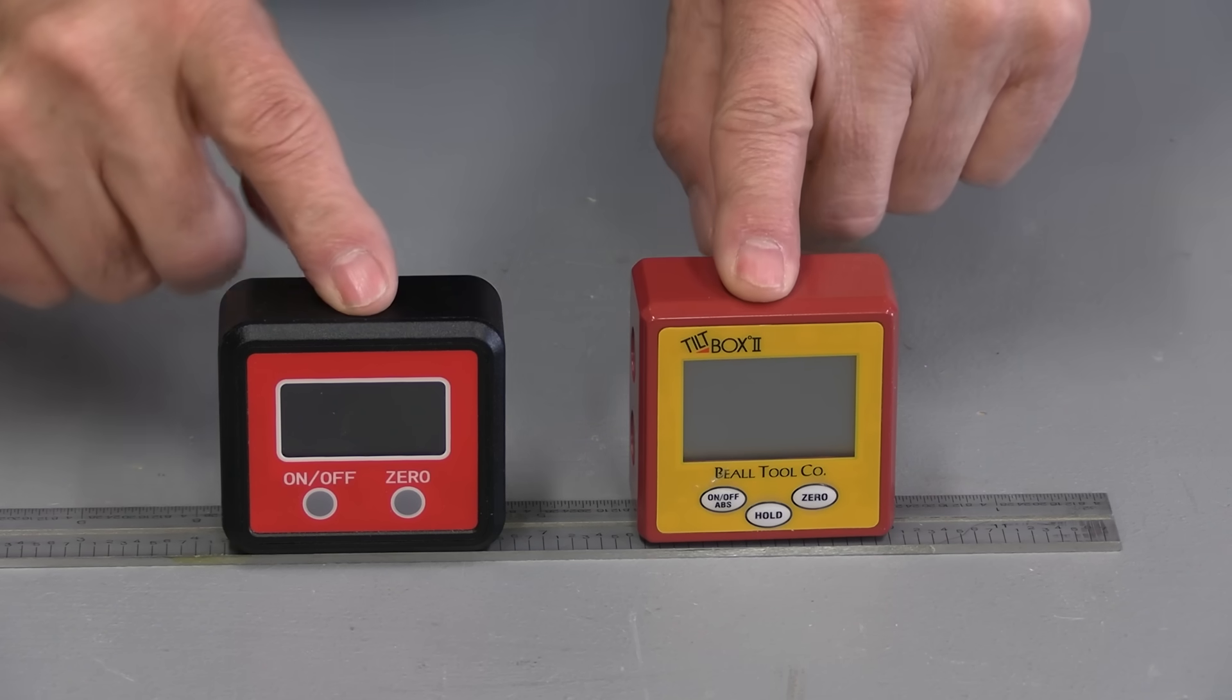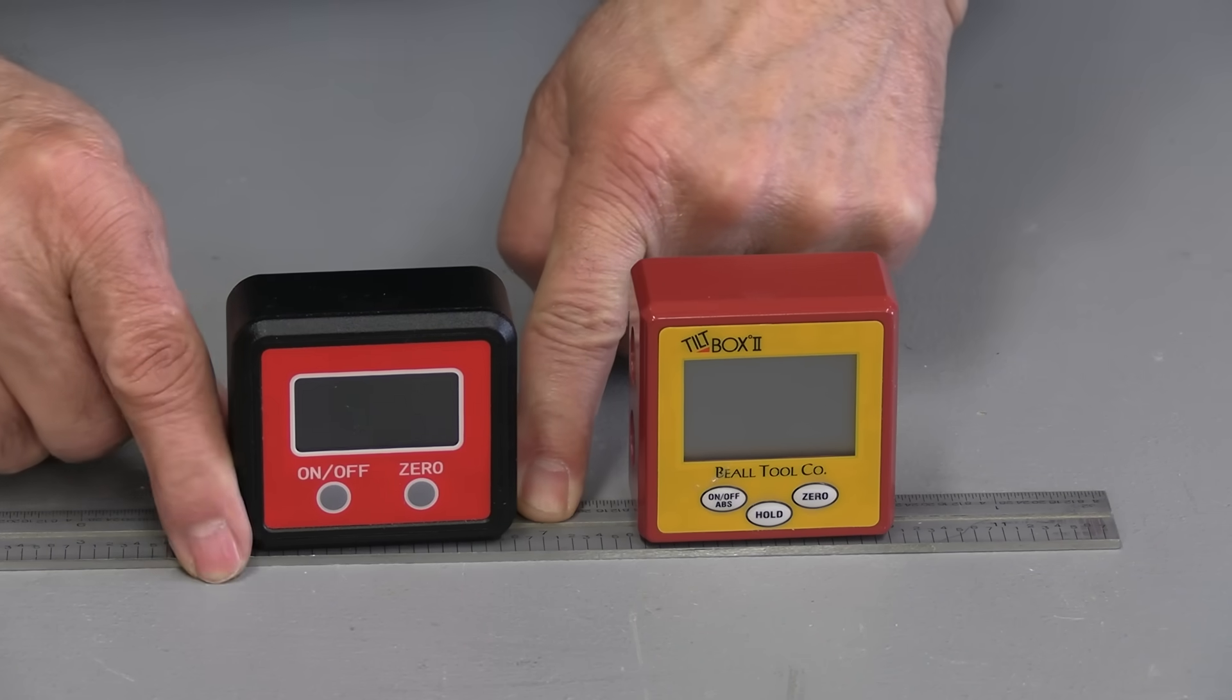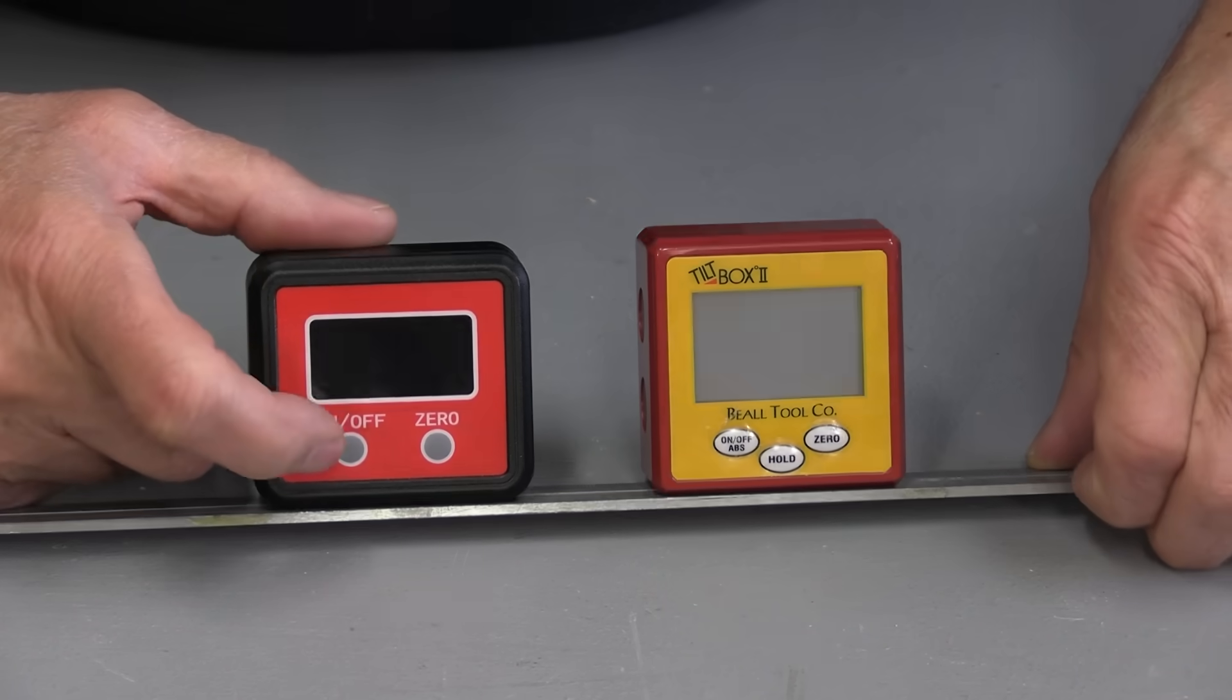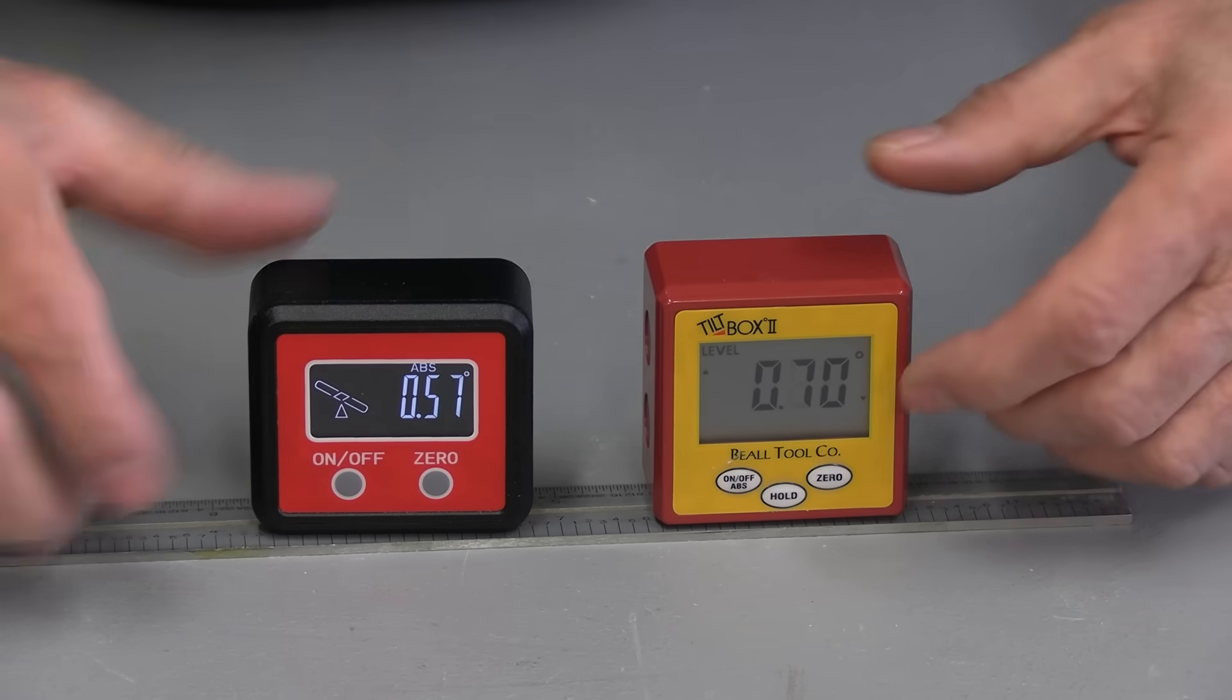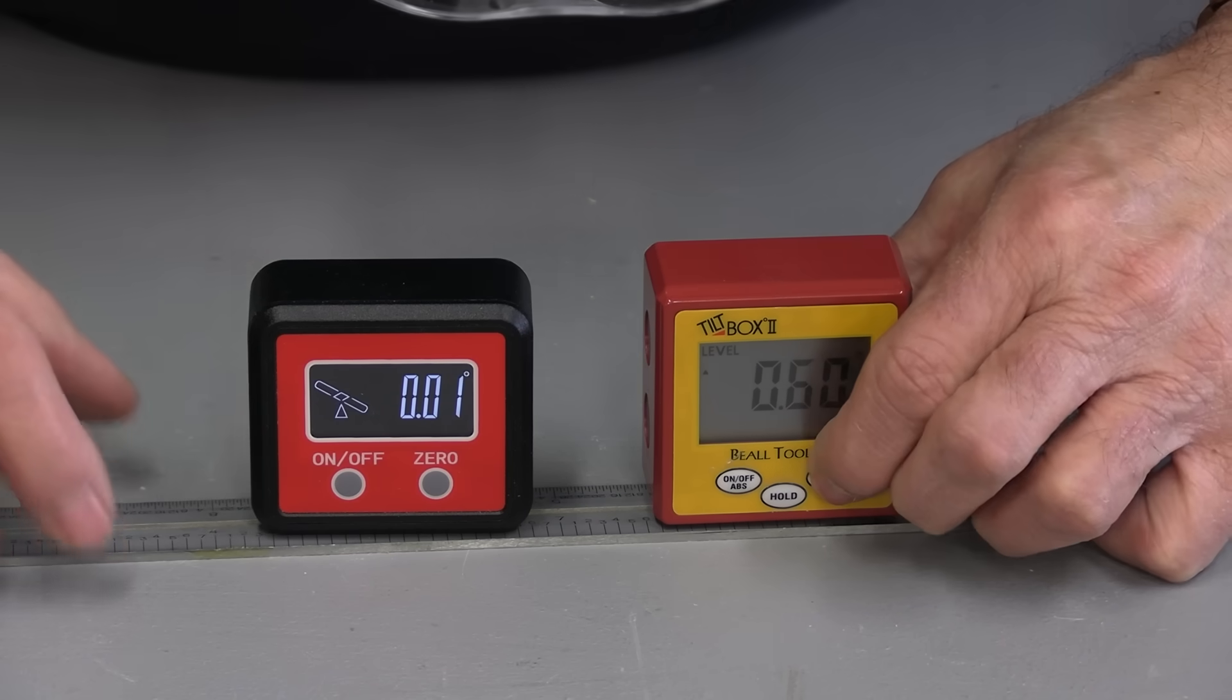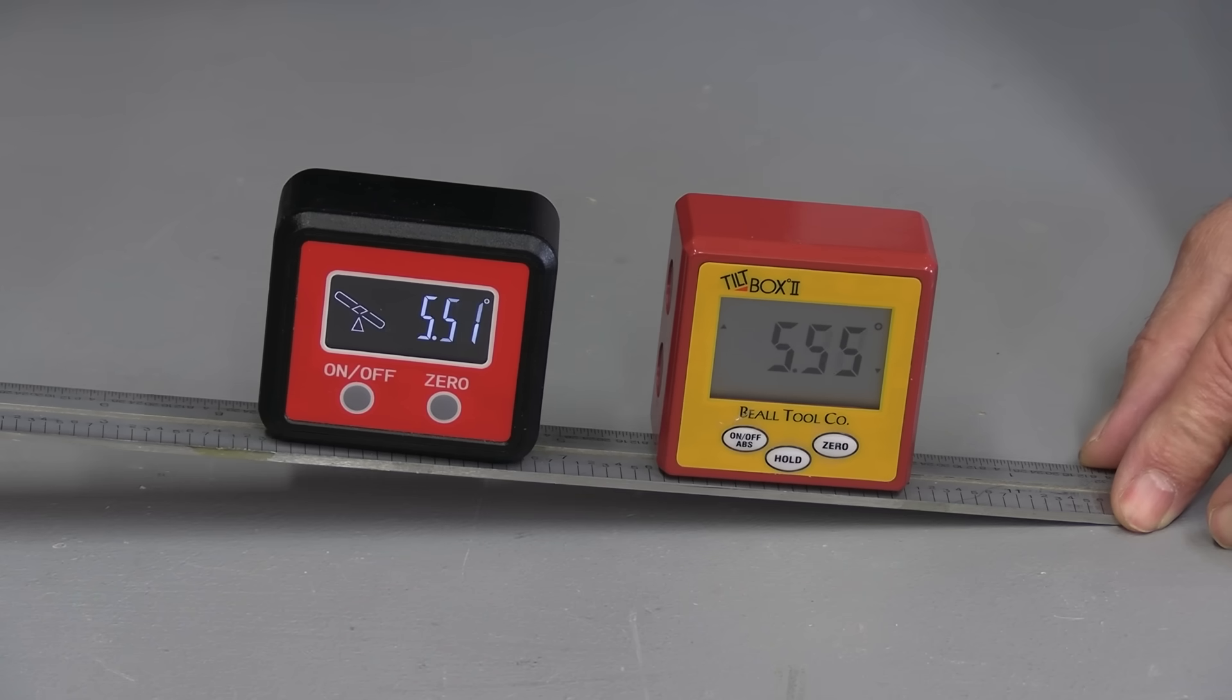If you're not familiar with these little boxes, basically they have a magnet in the bottom so they stick to steel, like the deck of your table saw, your jointer, your bandsaw, that sort of thing. And they hold on quite firmly. When you turn them on and set them to zero, and I'm going to do that quickly here. When you put them at an angle, they give you a reading, and you can see what that's doing.